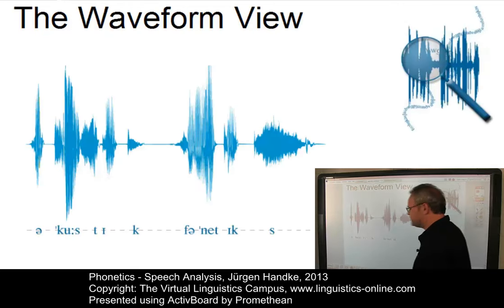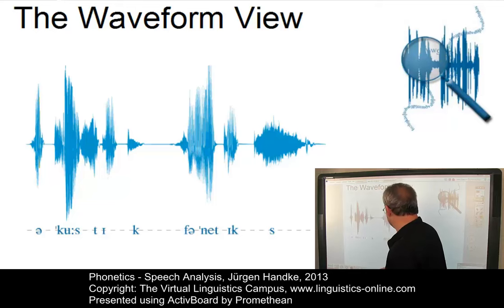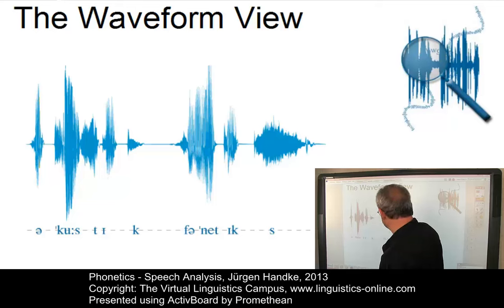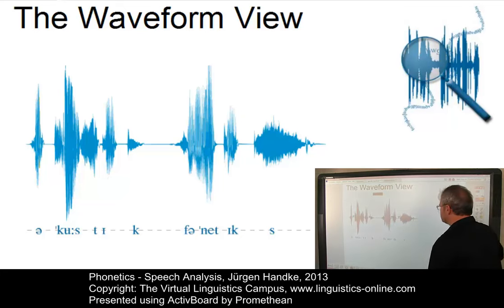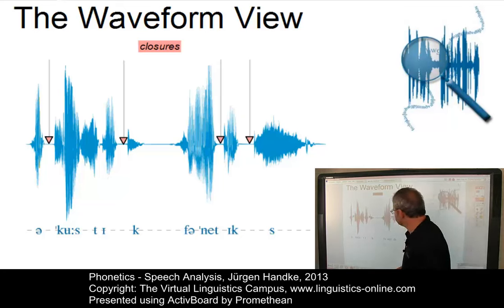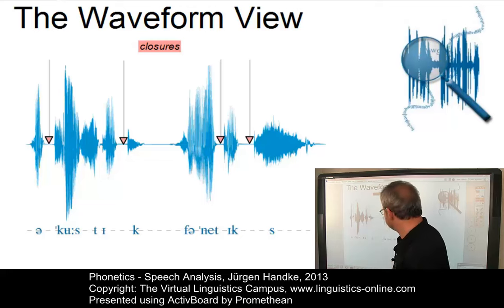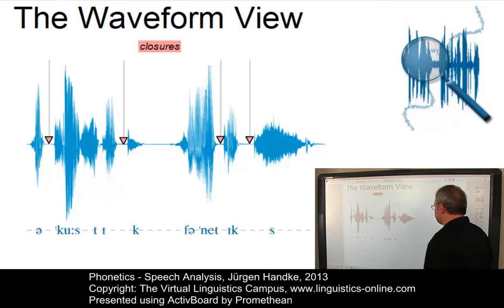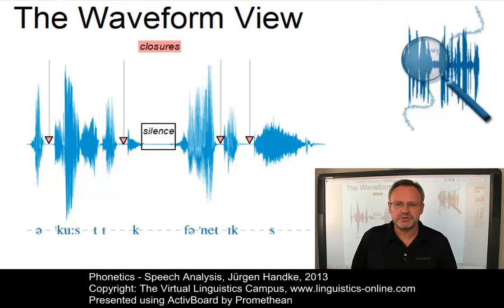The waveform view provides a general view of the sound wave and displays the amplitude information over time. Here is the waveform for the short sound sample 'acoustic phonetics'. As you can see, we have various portions of silence — for example, small portions of silence that signal some sort of closure during articulation. These typically occur before plosive consonants. Then we have longer portions of silence, most obviously between words: 'acoustic phonetics'.